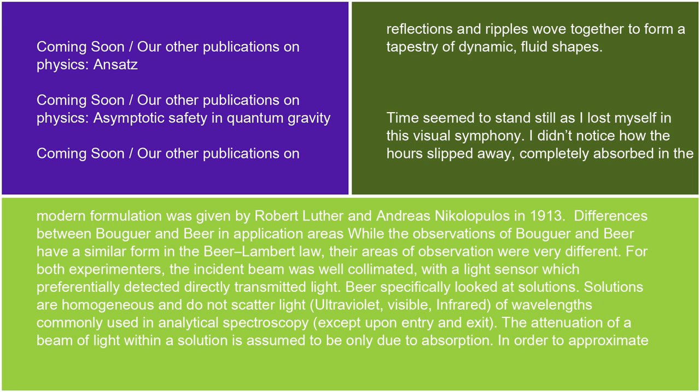Differences between Bouguer and Beer in application areas. While the observations of Bouguer and Beer have a similar form in the Beer-Lambert Law, their areas of observation were very different. For both experimenters, the incident beam was well collimated, with a light sensor which preferentially detected directly transmitted light.